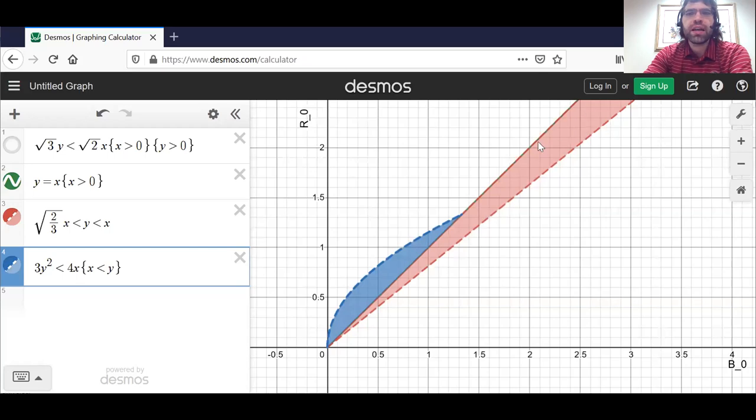Expanding on that, this wedge here represents victory for Red Army when both armies are using conventional tactics. Even though Blue Army outnumbers Red Army, it's not enough to make up for the differences in their equipment.